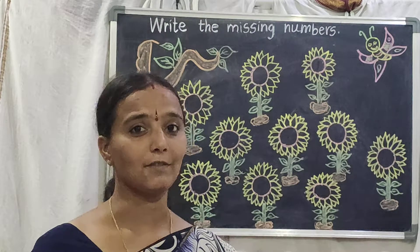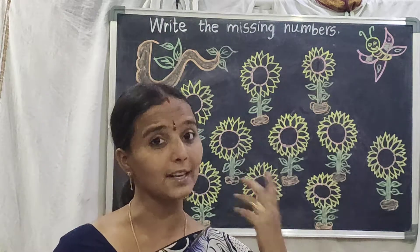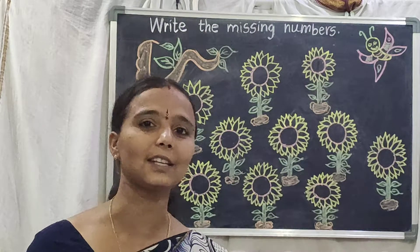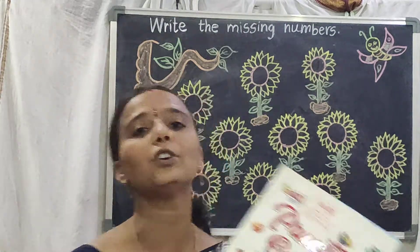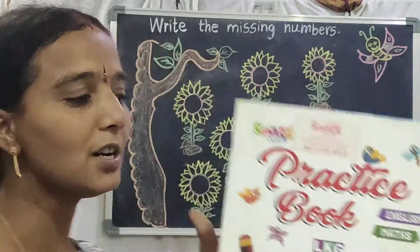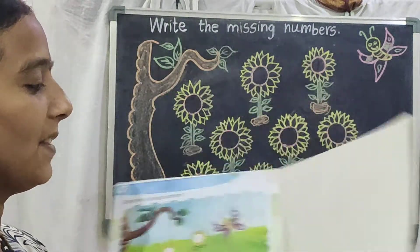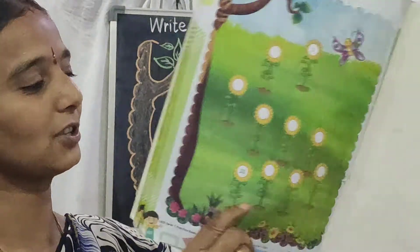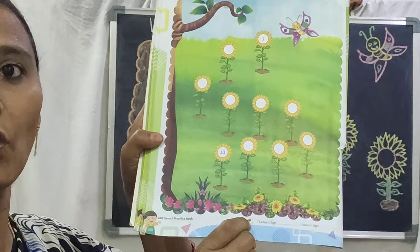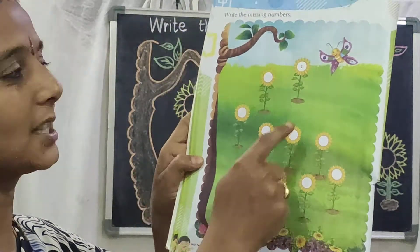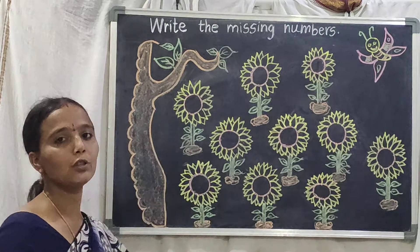Today we are going to write the same 1 to 10 numbers by activity in practice book. All of you take your practice book and turn back, open the last page. This is the last page, page number 40. The same page I have drawn on the board.